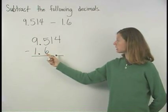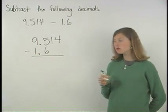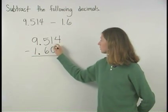Notice that 1.6 has nothing in the hundredths or the thousandths positions. So we use zeros to fill these positions.